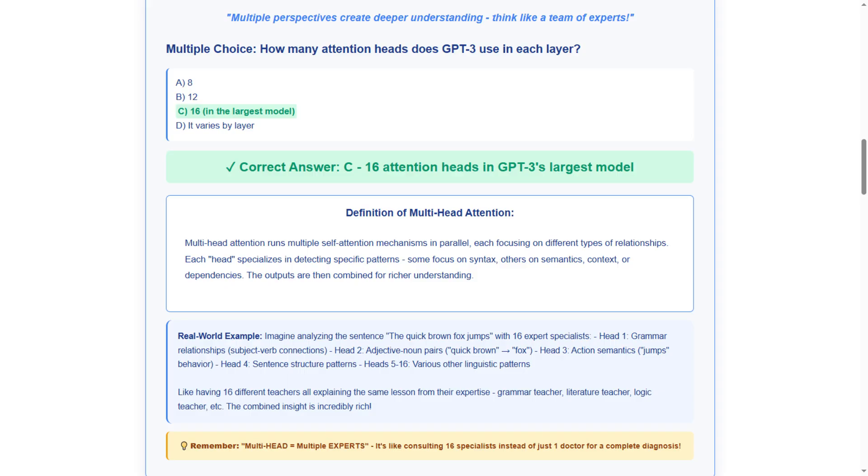The correct answer is C, 16 attention heads in GPT-3's largest model. We selected this because GPT-3's architecture specifically uses 16 parallel attention mechanisms in each layer to capture different types of linguistic patterns and relationships simultaneously. Multi-head attention runs multiple self-attention mechanisms in parallel, each focusing on different types of relationships.